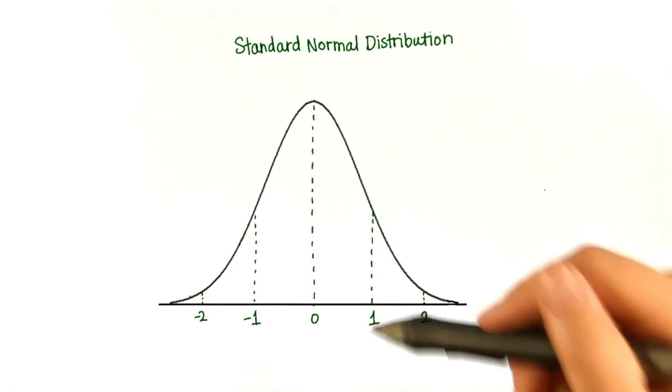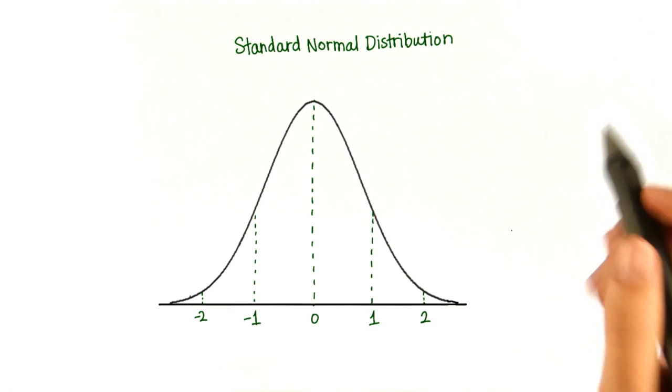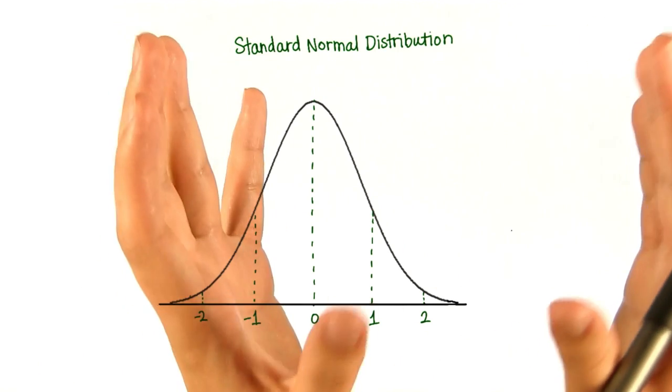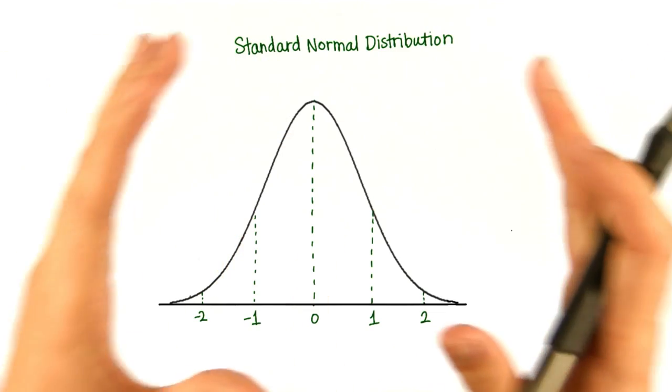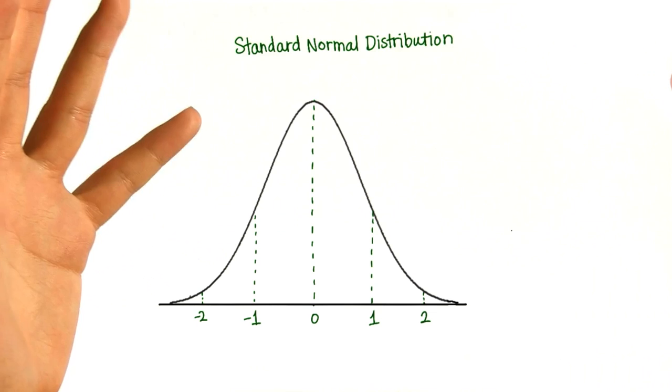Actually, we can create any normal distribution with any normal distribution. Sorry if that sounds confusing. Basically, we can take any normal distribution, convert it to the standard normal distribution, and then scale it any way we want.